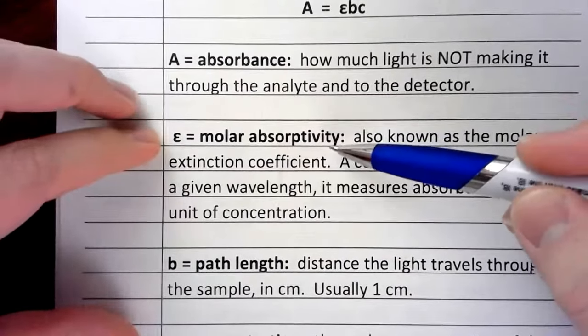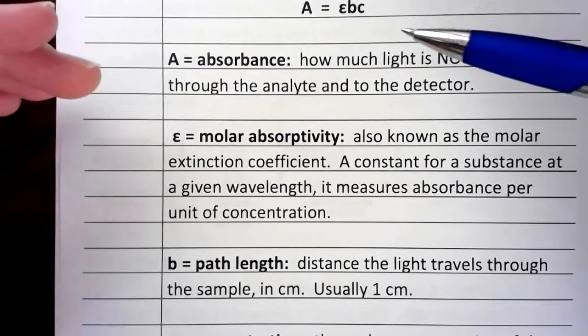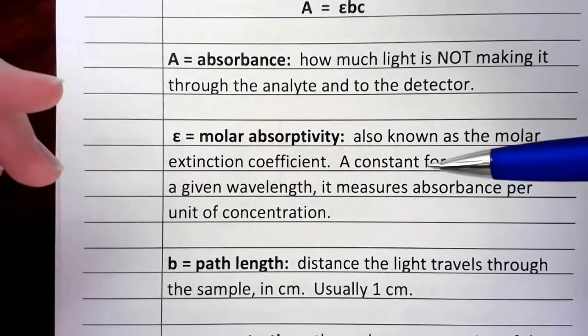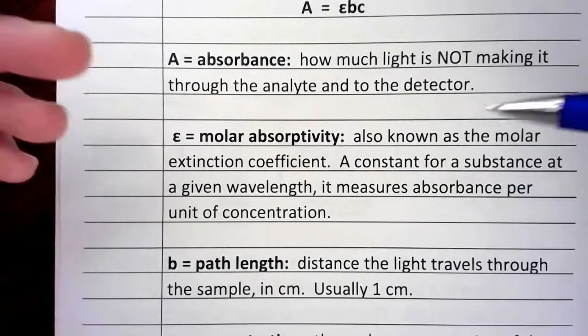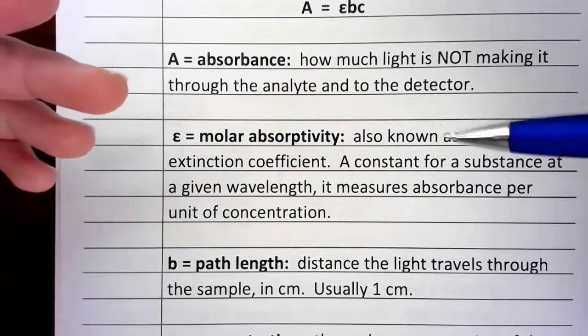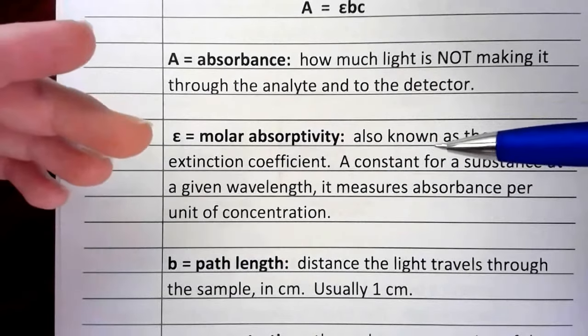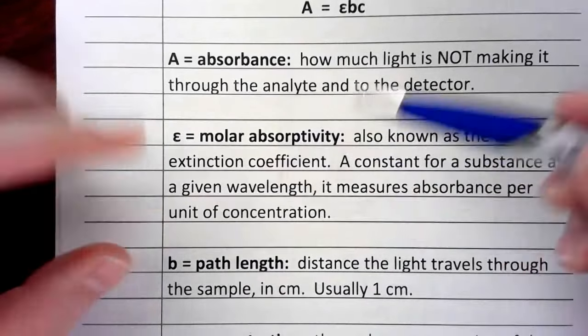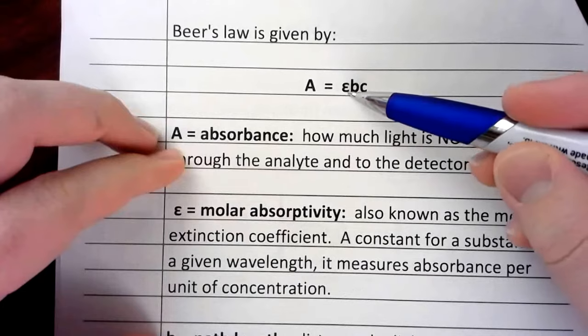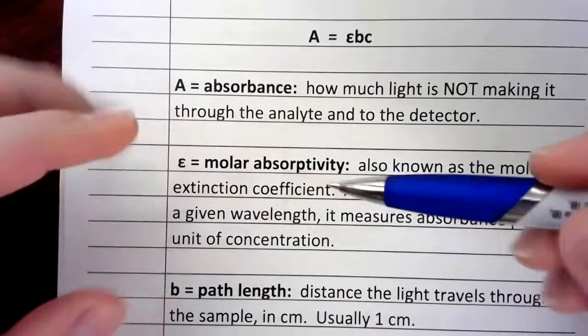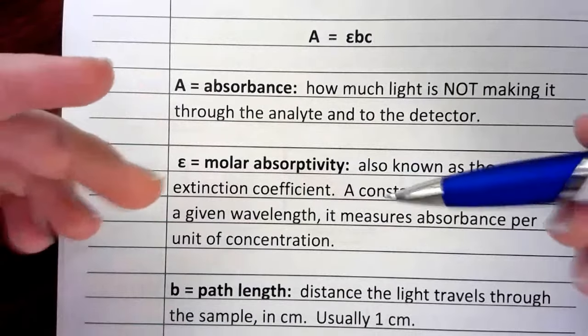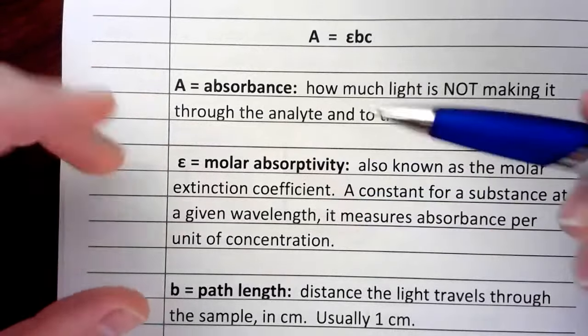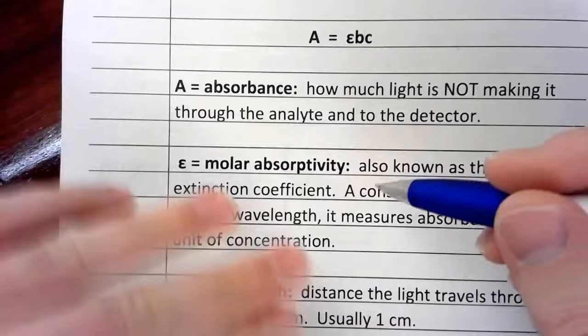Molar absorptivity, this is going to be different for every substance. It's also going to be different at specific wavelengths. So something to be aware of is, for example, copper 2 sulfate is a blue solution. At certain wavelengths, especially those in the red and orange, you're going to get a lot of absorption. It's a function of concentration. So ε, it kind of looks like epsilon here, it's a constant for a given wavelength, but nothing else.